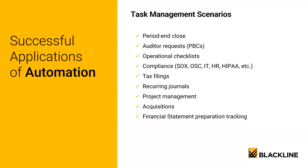There's also a big time savings on indirect activities, like the time to refocus. Think about emailing your team for status updates on their month-end tasks. You have to stop what you're doing to write the email, and once you're done it takes a few minutes to refocus your mind and go back to what you were working on. The person you emailed has to stop what they're doing to respond, and when they're done it takes them a few minutes to refocus as well. These emails quickly add up across your team, so the time spent to refocus adds up too. With Blackline, all that goes away because there's no need for sending status emails anymore.